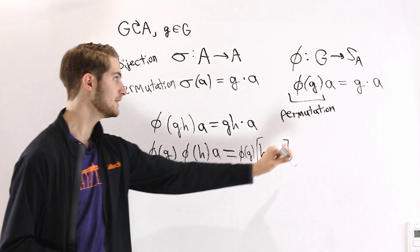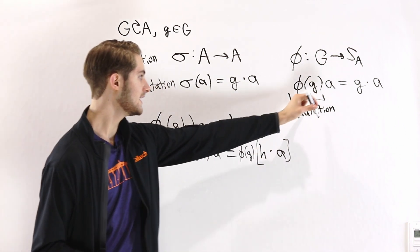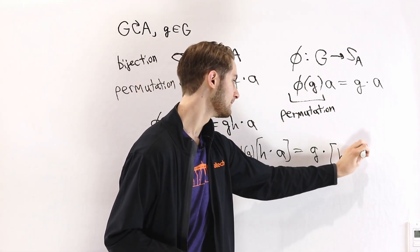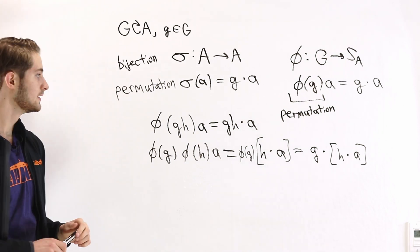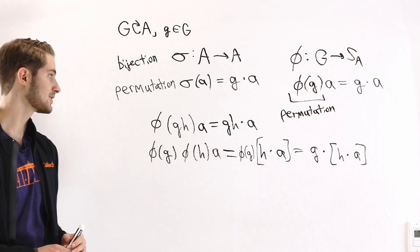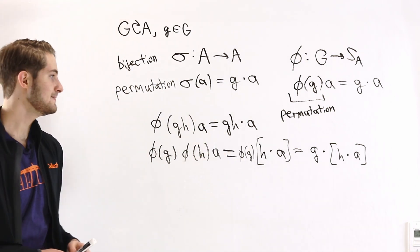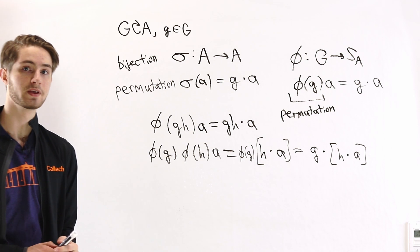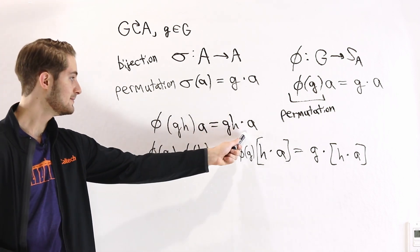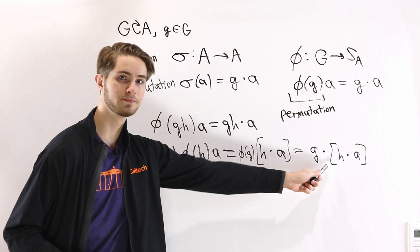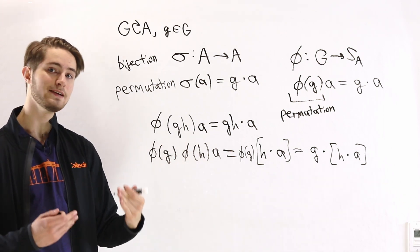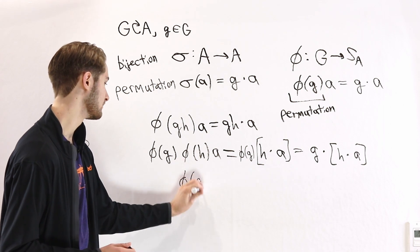Remember that h·a is just an element of the original set A. So applying φ(g) to it using the same definition gives g·(h·a). One of the parts of the definition of a group action is that (gh)·a must be the same as g·(h·a) — that's the rule of associativity. So φ(gh)(a) is the same thing as (φ(g)∘φ(h))(a). Because these two maps φ(gh) and φ(g)∘φ(h) give the same result for every possible input, they are the same permutation.